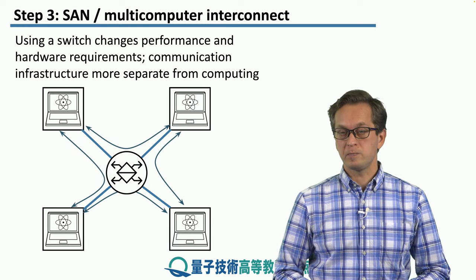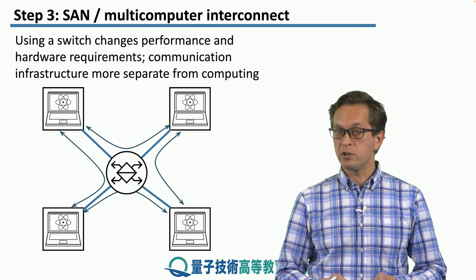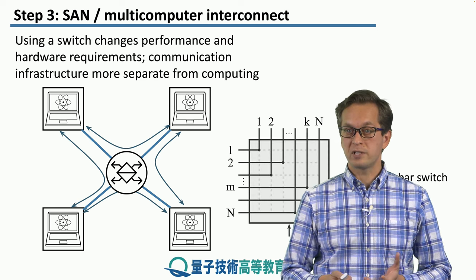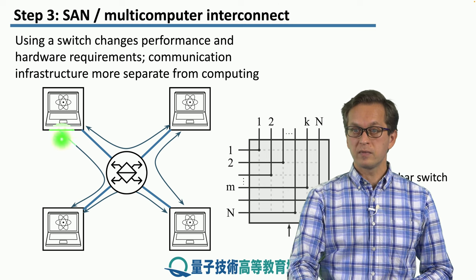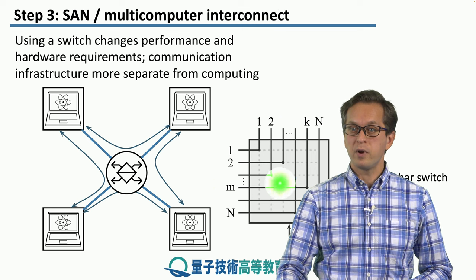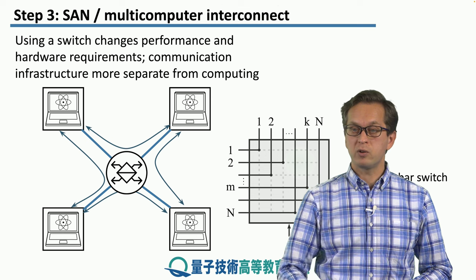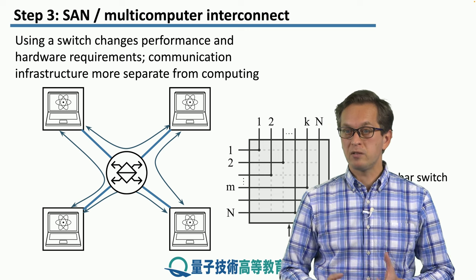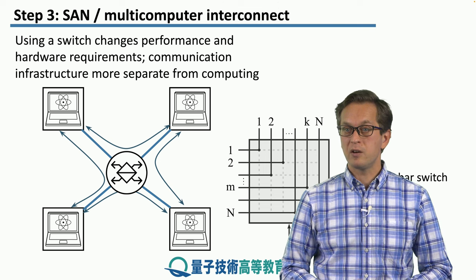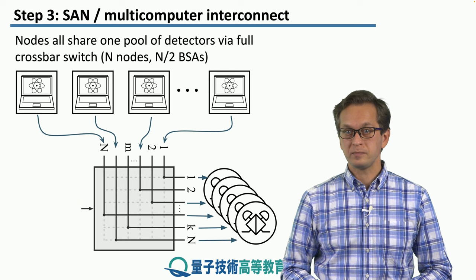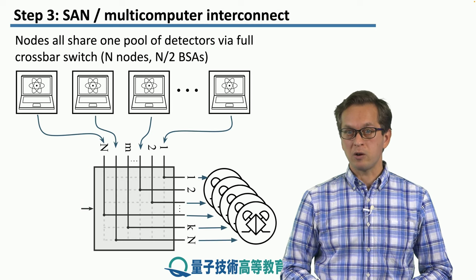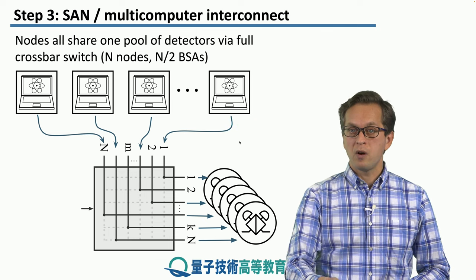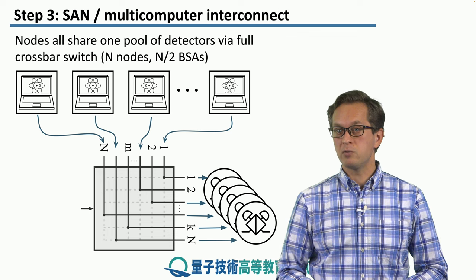A different approach is to use a switch — placing a switch in the middle, where its configuration determines which pair of computational nodes are talking to which other pair. We talked about a full crossbar, where we have N ports on one side and, depending on the switch control, can connect them arbitrarily to any of the N outputs. A full N-by-N crossbar switch was discussed in our lesson on hardware.